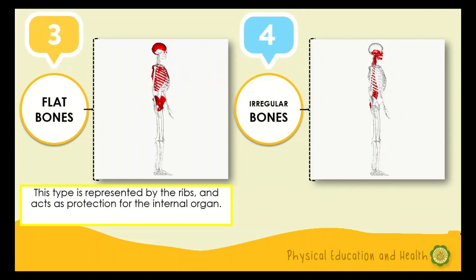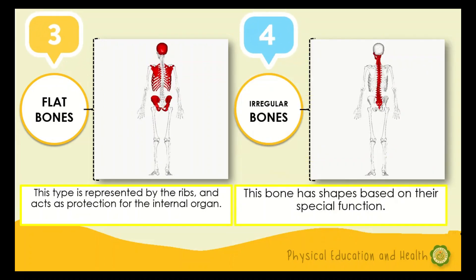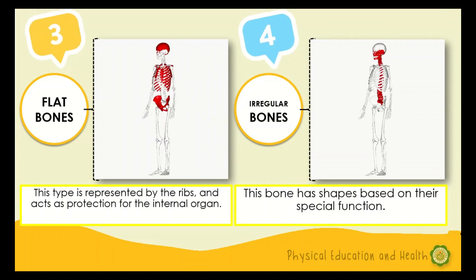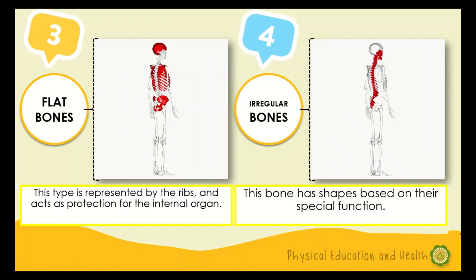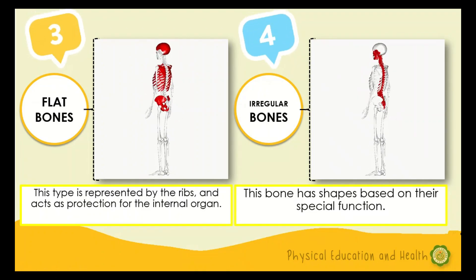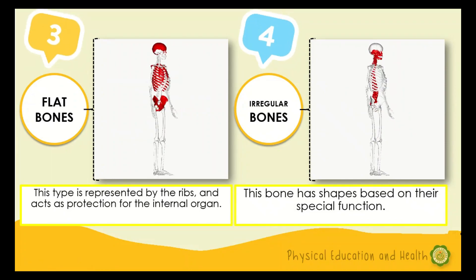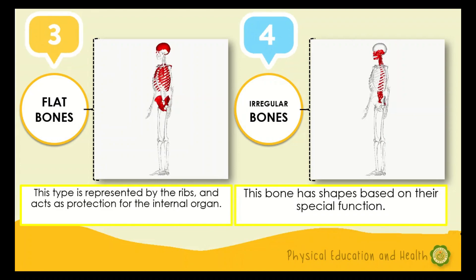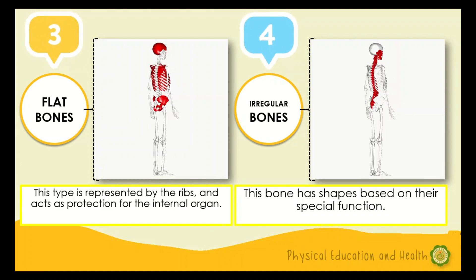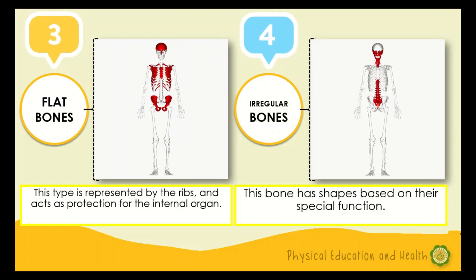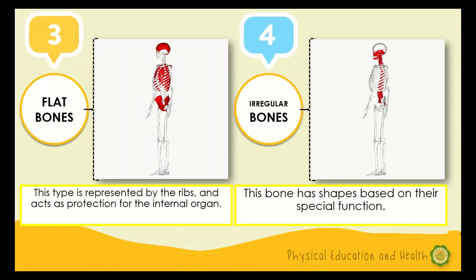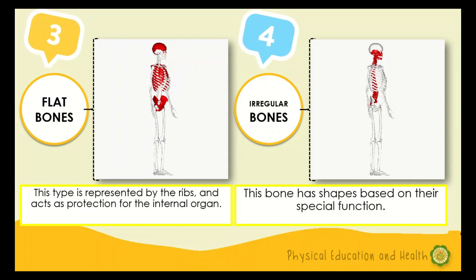The last type is irregular bones. These bones have a shape based on their special function — an example is the lumbar vertebra. Before we proceed to the next lesson on muscles, I want you to get a piece of clean paper to answer two questions. I am giving you three minutes. Number one: what are the functions of bones and muscles in the human body? Number two: how important is it to have knowledge about this lesson?